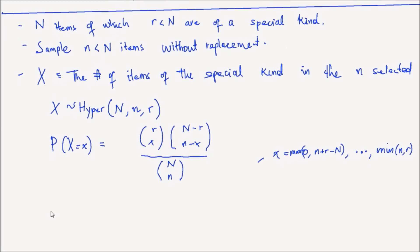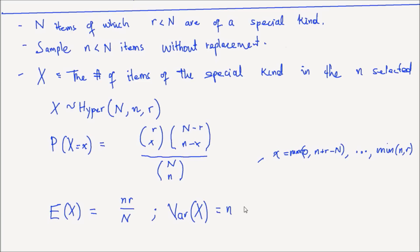The expected value of this hypergeometric random variable is n times r divided by N. Intuitively, r divided by N is the proportion of the special type in the collection, and since you sample little n items, the expected count is n times that proportion. The variance is given by n times (N minus n), divided by (N minus 1), multiplied by (r divided by N) times (1 minus r divided by N).